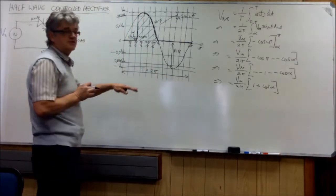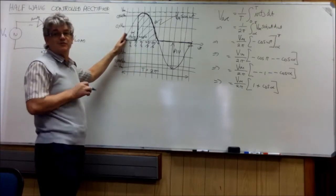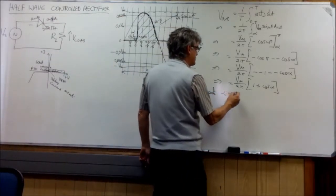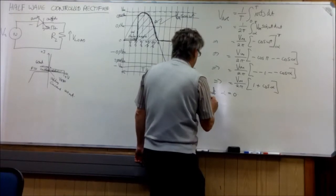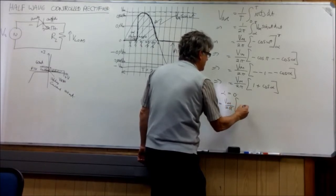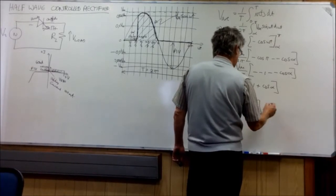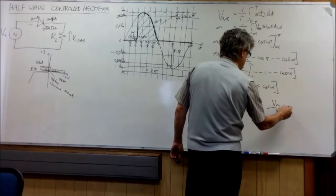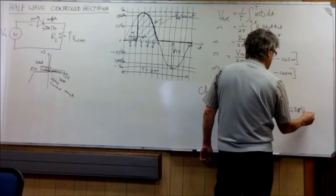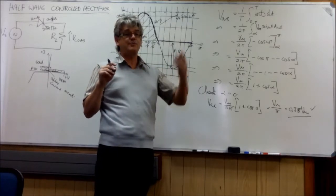We already know what the answer is for when alpha is zero. Because we just did it previously. So we say check. Alpha equals zero. And then we say therefore v average is equal to v max over two pi. And it's one plus cos of zero. Which is one plus one. Which is v max over pi. Which is 0.318 v max. So that's correct. We are applying a principle called extreme conditions.